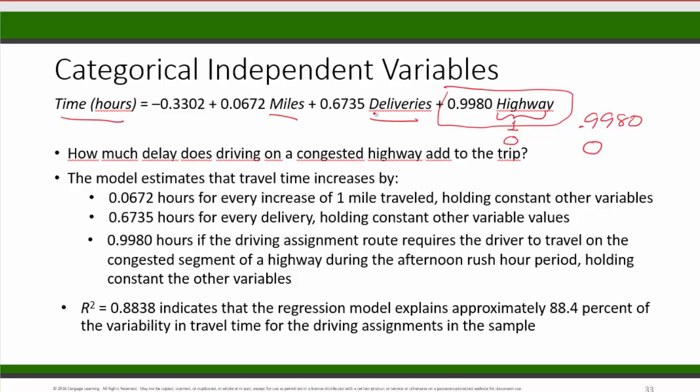The other regression coefficients can be interpreted the same way. The coefficient 0.0672 says that the travel time would increase by about 0.0672 hours per one mile increase in the distance if the other variables remain constant. That is, the deliveries and the highway remain the same. Now 0.0672, if you multiply that by 60, it's 4 minutes.